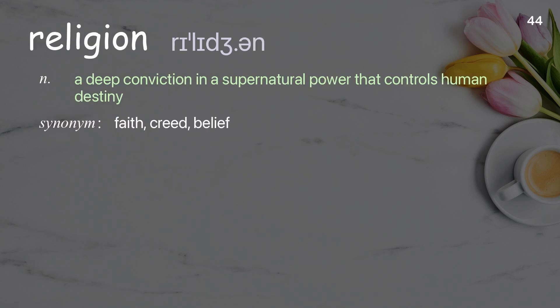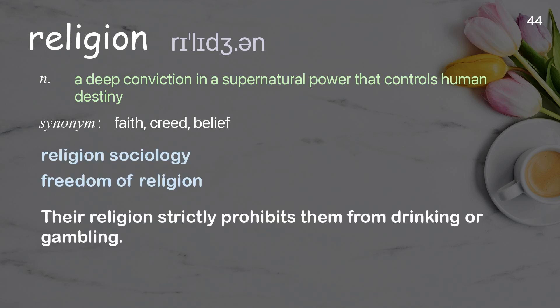Religion: A deep conviction in a supernatural power that controls human destiny. Examples: religion sociology, freedom of religion. Their religion strictly prohibits them from drinking or gambling.